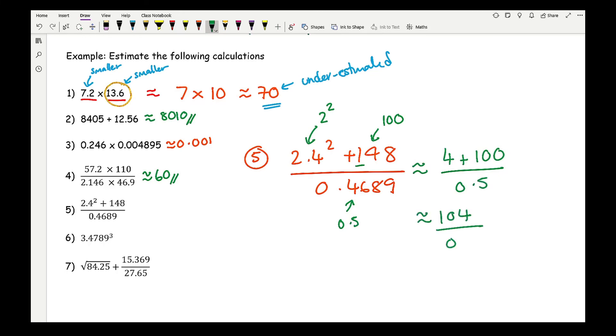So approximately this is going to be 2 squared, which is 4, plus 100, all divided by 0.5. Now 100 plus 4 is 104, and divided by 0.5—when you're dividing by a half, it's the same as multiplying by 2—so this is going to be 208.